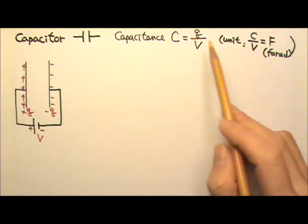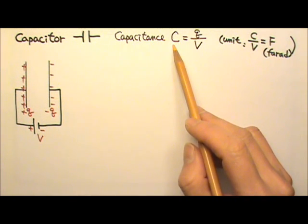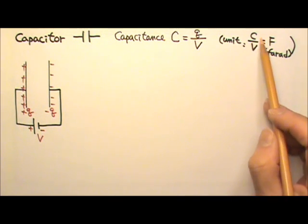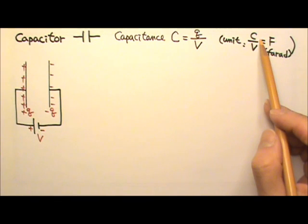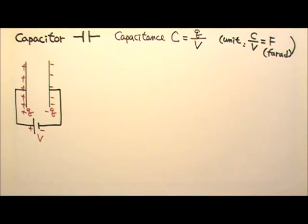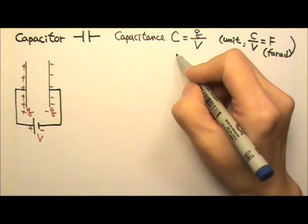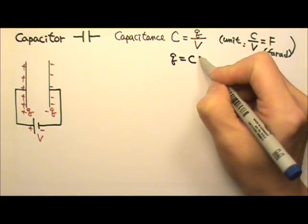The capital C's here can be confusing. When used as a symbol, it is capacitance. When used as a unit, it is Coulombs. So please be careful not to mix them up. For this equation, we usually see it in this format, Q equals C times V.